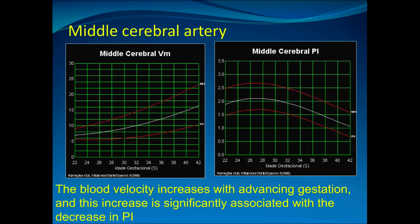This shows the two charts produced by Nicolaides' group. The one used in both units is the middle cerebral artery pulsatility index, which follows the same principle as for the umbilical artery. You can see that blood velocity increases with advancing gestational age, and this increase is significantly associated with a decreased pulsatility index.